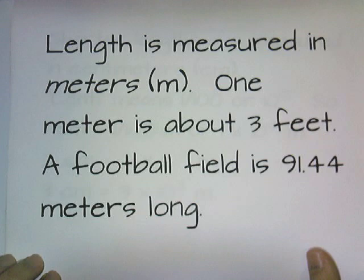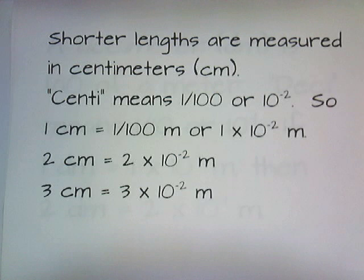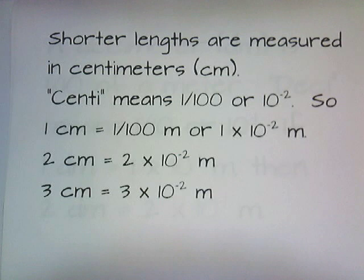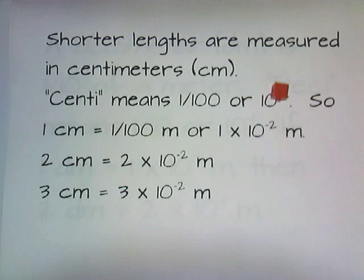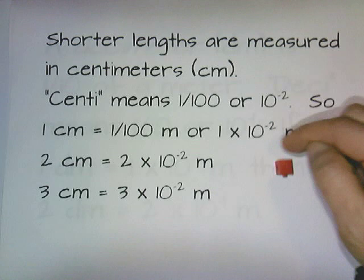But what if you want to measure shorter lengths, like the length of a pencil? For shorter lengths, we use the centimeter. The way we come up with the centimeter is that you take a meter stick and slice it into 100 pieces, and one of those little pieces — one one-hundredth — would be a centimeter. Here is something that is one centimeter in length. This is a cube that's one by one by one, and that will give you an idea of how much one centimeter is from here to here.